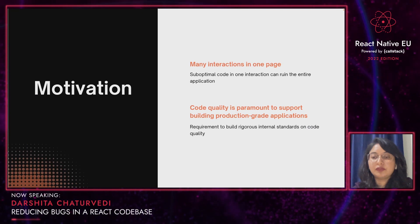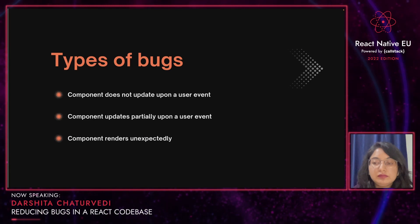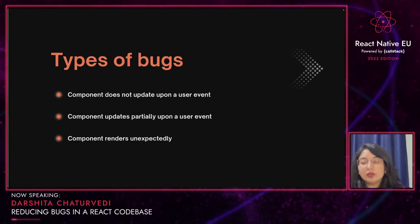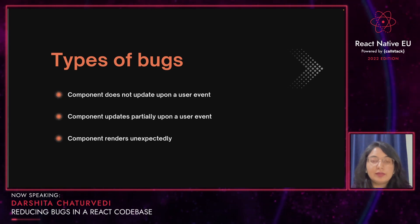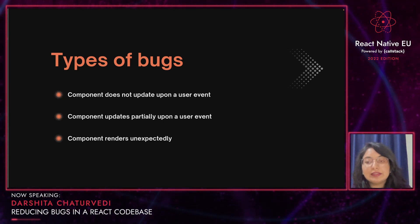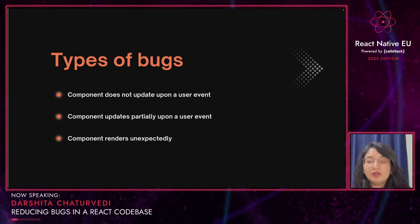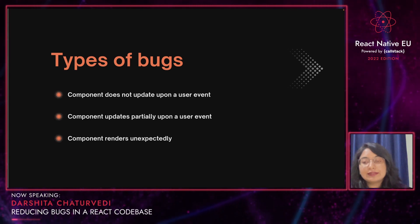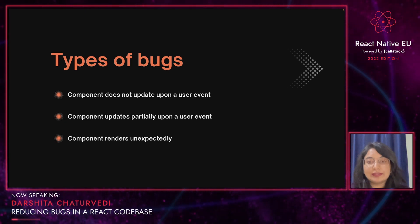Other examples of such software include design tools such as Canva, Figma, etc. In this talk, we'll cover how to prevent three types of unexpected code behaviors: first, component does not update upon a user event; second, component updates partially upon a user event, that is, the previous state is still there; and third, component renders unexpectedly. While developing React applications, such bugs often go unnoticed during manual testing, and setting up a pipeline for automated testing is difficult.